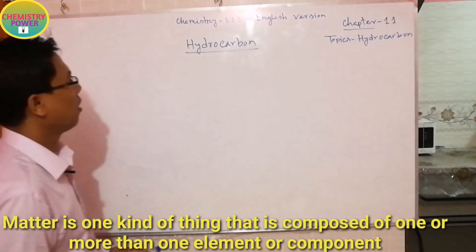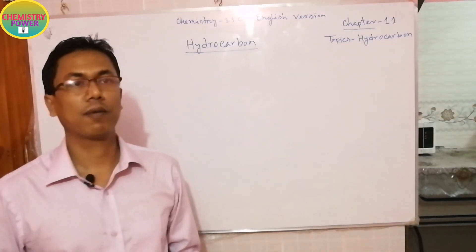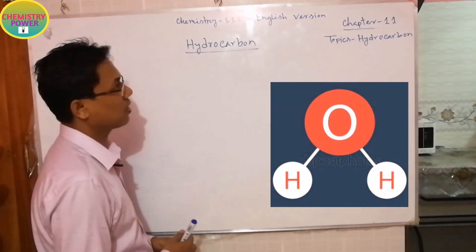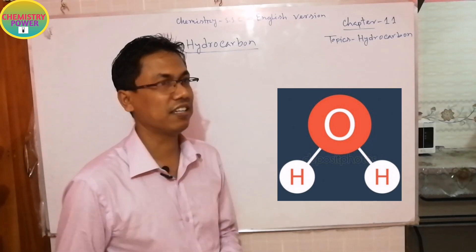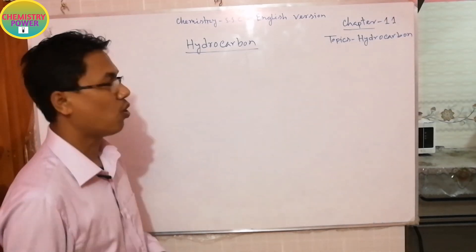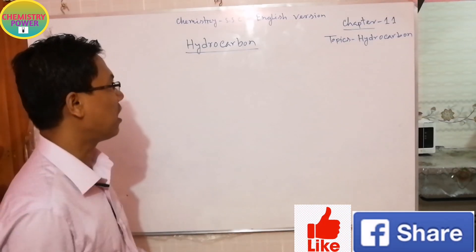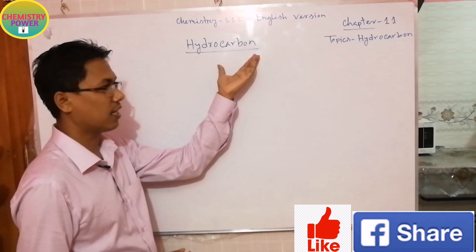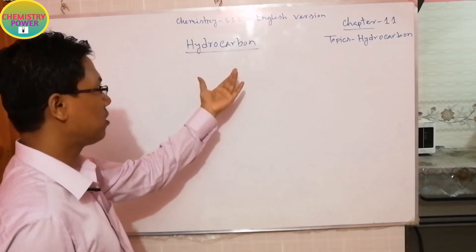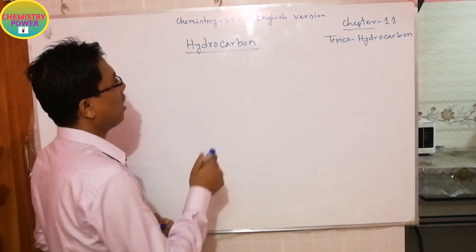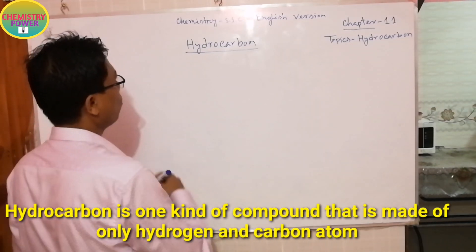For example, water — you know the chemical formula for water. Water is one kind of matter or substance that is made of only hydrogen and oxygen elements. Similarly, hydrocarbon is one kind of compound that is made of only hydrogen and carbon atoms.